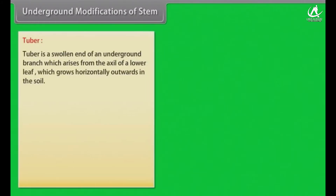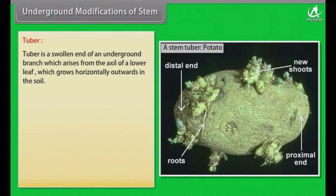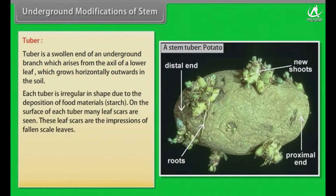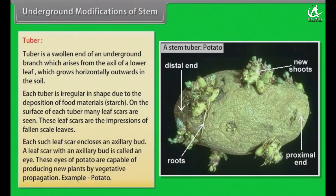A tuber is a swollen end of an underground branch which arises from the axil of a lower leaf and grows horizontally outwards in the soil. Each tuber is irregular in shape due to the deposition of food materials (starch). On the surface of each tuber, many leaf scars are seen — these are the impressions of fallen scale leaves. Each such leaf scar encloses an axillary bud; a leaf scar with an axillary bud is called an eye. These eyes of potato are capable of producing new plants by vegetative propagation. Example: Potato.